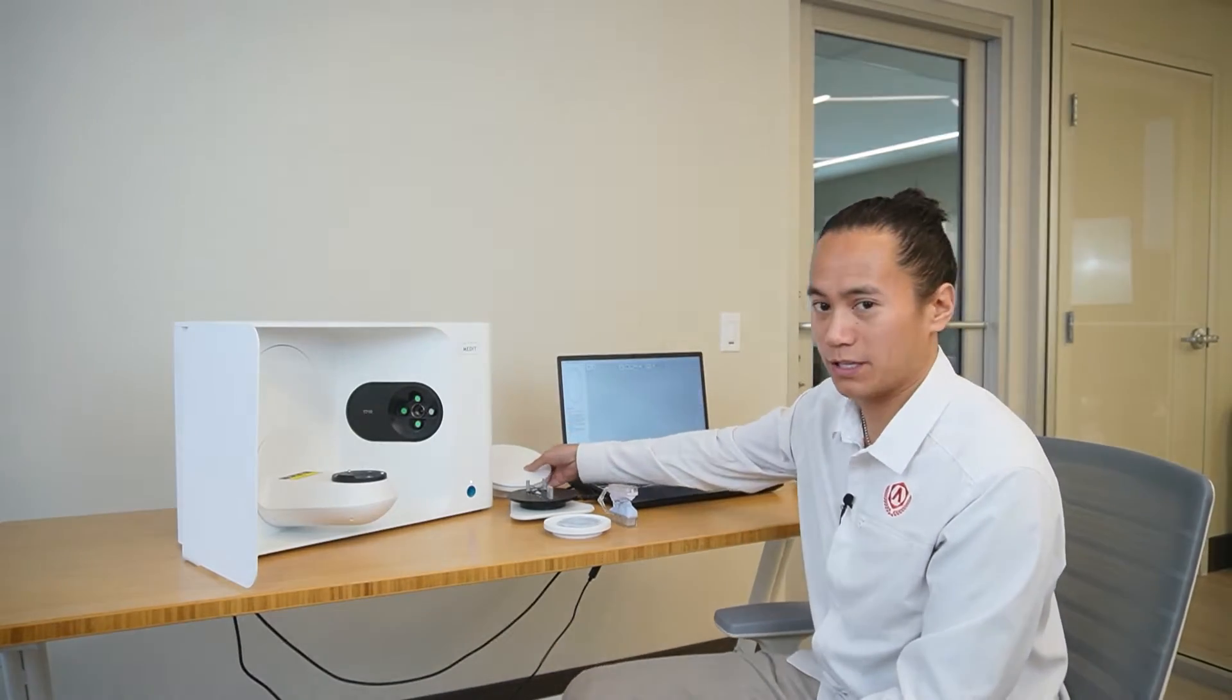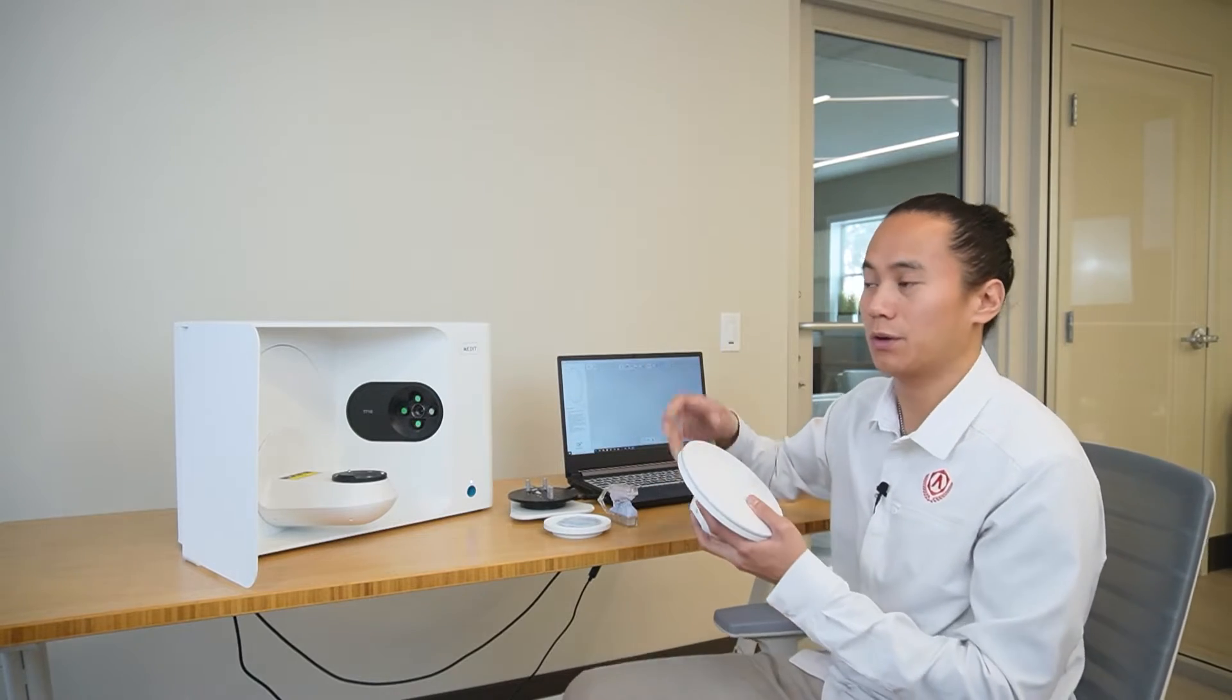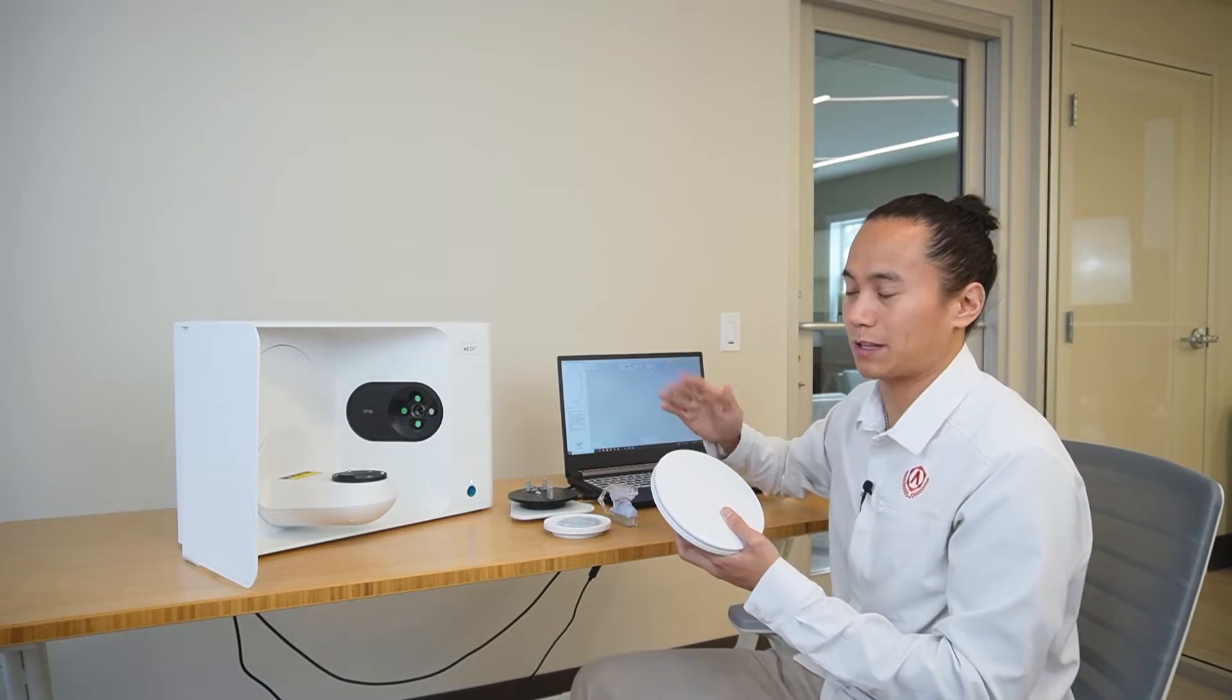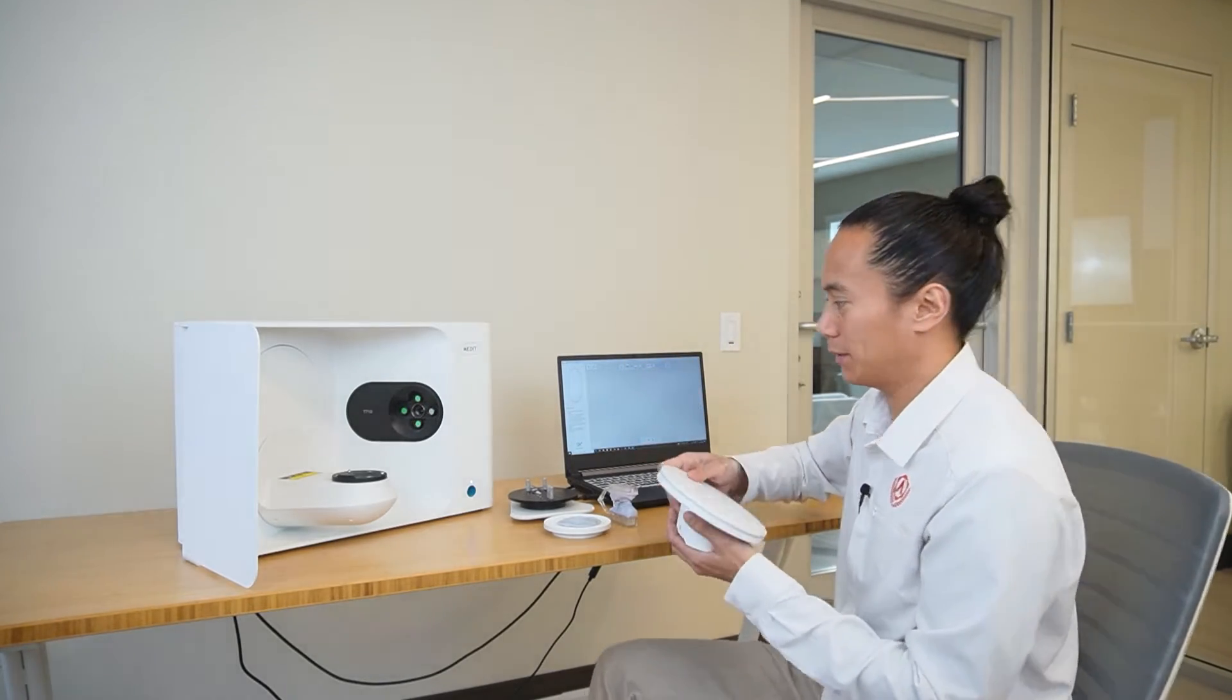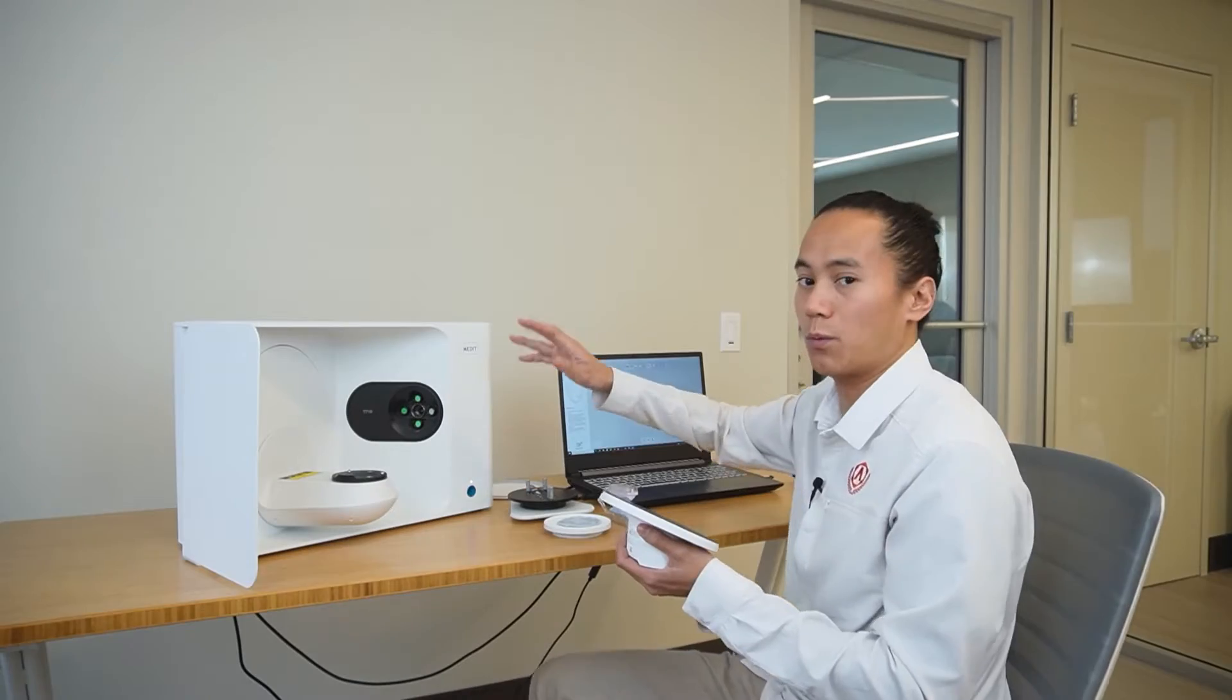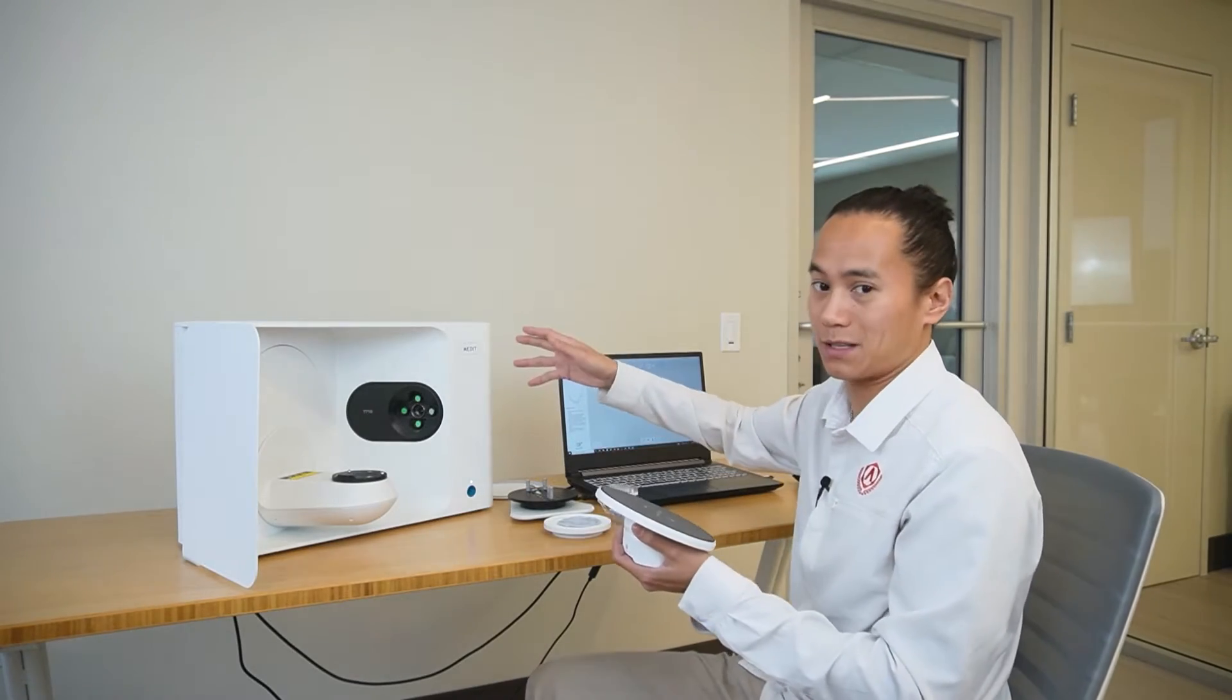Now that the scanner's been installed, the first thing that we're going to do before we start any scanning is calibrate. You should calibrate your scanner every 30 days. The MediLink application will give you a timer for the last time your scanner's been calibrated. In between the 30 days, you will want to calibrate any time that the scanner's been moved.